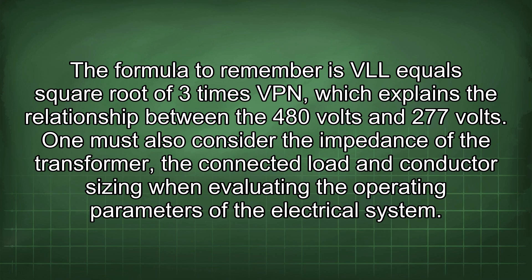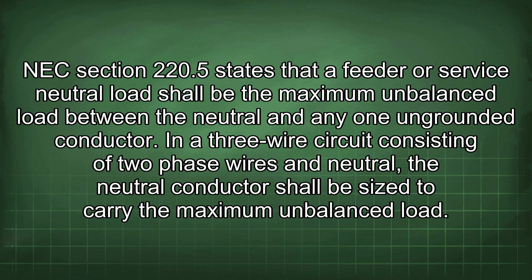One must also consider the impedance of the transformer, the connected load, and conductor sizing when evaluating the operating parameters of the electrical system. NEC section 220.5 states that a feeder or service neutral load shall be the maximum unbalanced load between the neutral and any one ungrounded conductor. In a 3-wire circuit consisting of two phase wires and neutral, the neutral conductor shall be sized to carry the maximum unbalanced load.